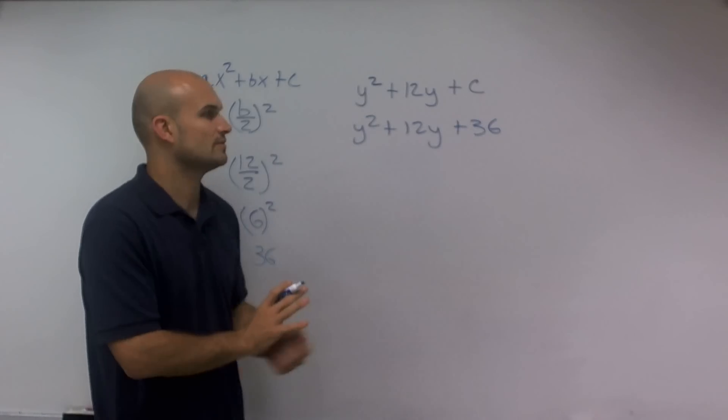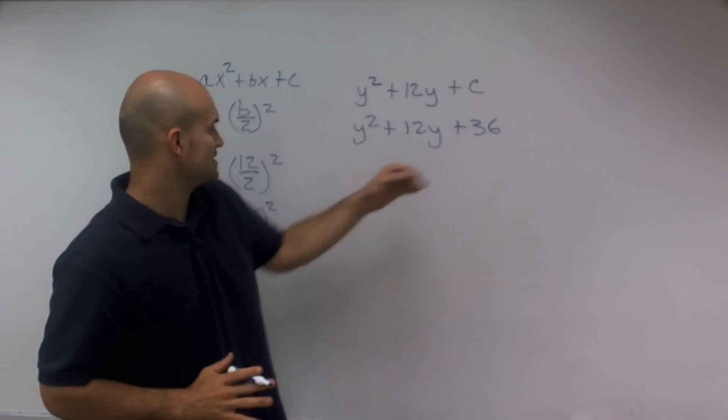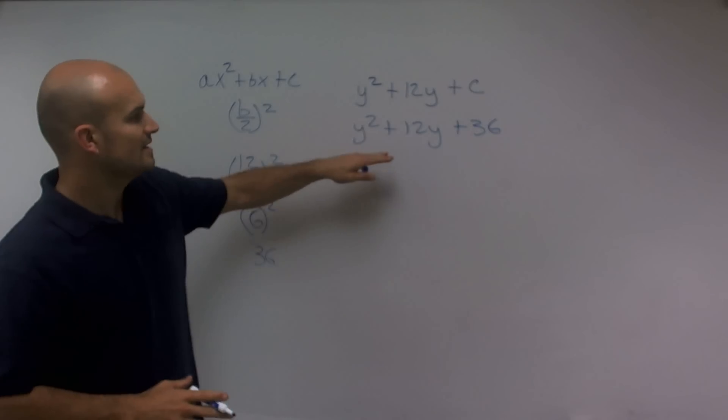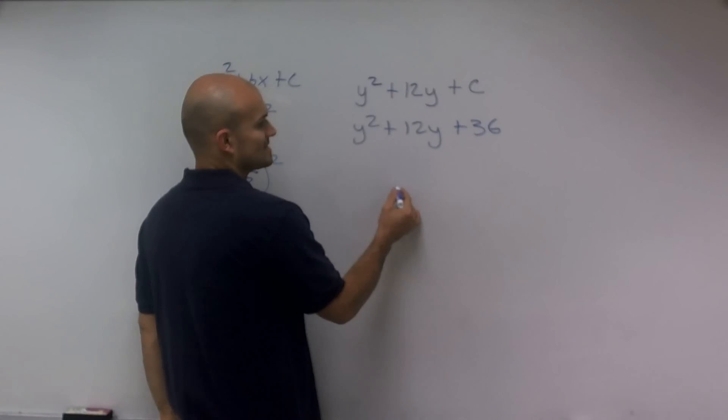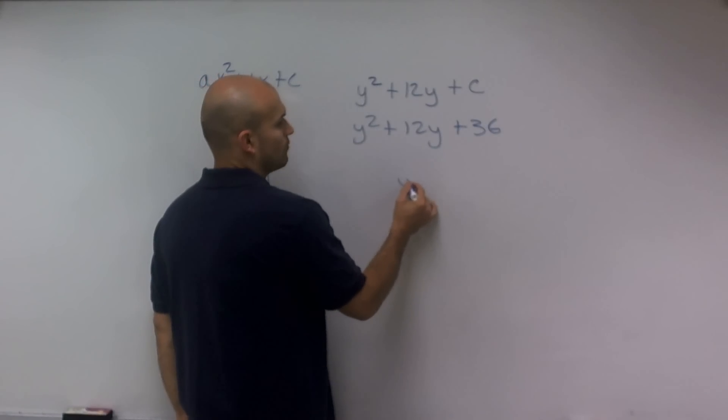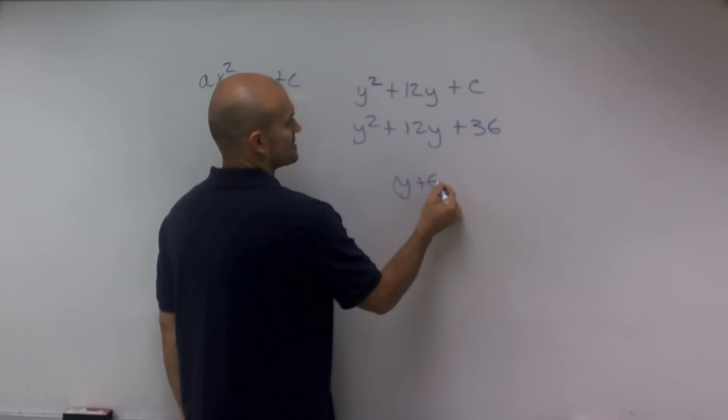And I'll just kind of help you out. The reason why we want it to equal 36, the reason why we do this process is because the next step they would use in completing the square would be to write this as a perfect square binomial, which would be y plus 6 squared.